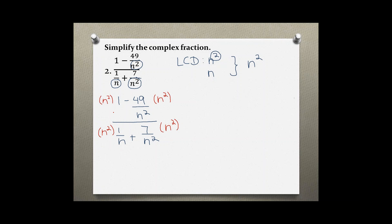In this case there is no denominator, so nothing to cancel. But here, top and bottom we have n squared and n squared. Then over here we have an n in the bottom and we cancel out one n on top, so we are left with just one n. And then n squared and n squared cancel.